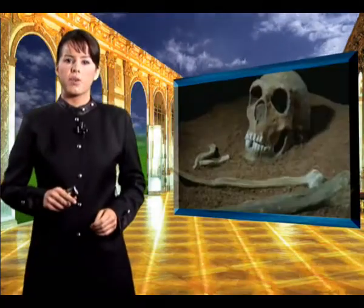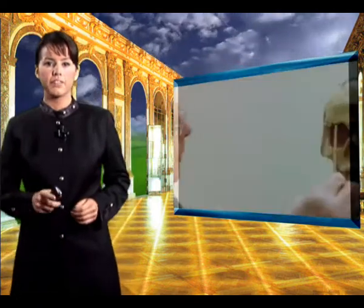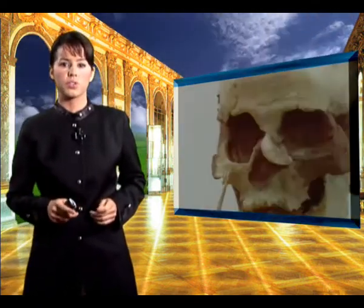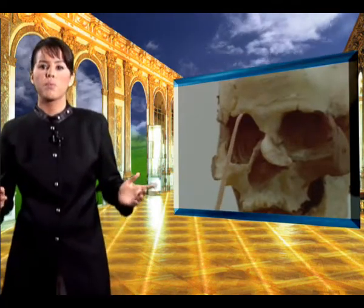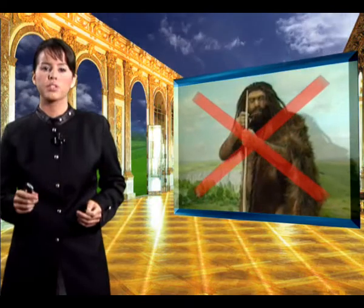Reconstructions based on bone remains can only reveal the most general characteristics of the creature, since the really distinctive morphological features of an animal are soft tissues, which quickly vanish after death. Therefore, due to the speculative nature of the interpretation of soft tissues, the reconstructed drawings or models become totally dependent on the imagination of the person producing them.